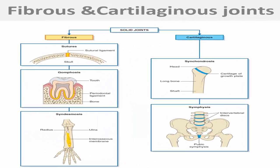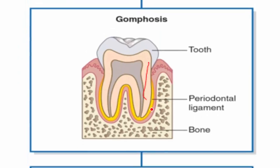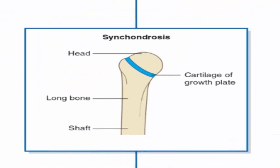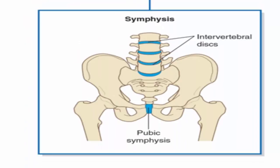Here are the different types of fibrous and cartilaginous joints. This is the suture type in the skull; this is gomphosis between the root of the tooth and the socket in the mandible; and this is syndesmosis with fibrous tissue between two bones such as the radius and ulna. For cartilaginous joints: this is the primary cartilaginous joint — cartilage between the epiphysis and metaphysis of the long bones, which disappears at a certain age. This is the secondary cartilaginous joint, as seen in the bodies of the vertebrae and intervertebral discs.